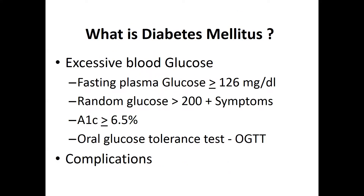What is diabetes? It's an excessive blood sugar. There are a variety of ways of defining it — for example, a fasting glucose of over 126, a random glucose of 200 or greater plus symptoms, an A1C of 6.5, and we can also do an oral glucose tolerance test. The problem with diabetes is not so much the sugar per se, but actually the complications that ensue.